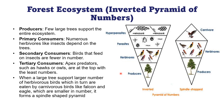In a forest ecosystem, the pyramid of numbers can be inverted or spindle-shaped. In a parasitic food chain, there is a tree in which birds remain. The number of trees is very few, but the number of birds is 5, 10, or 100. In those birds there are parasites — like lice and mites — whose population is greater than the number of birds. There are also hyperparasites that feed on the parasites, so the overall shape is inverted. In another food chain with a tree, birds, and large predators like hawks and eagles at the top, the shape is spindle-shaped.